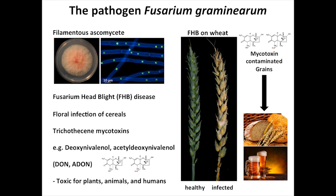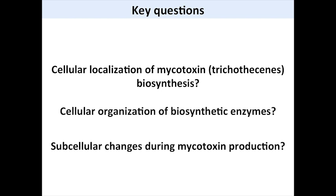Trichothecenes are also very important to study since they are known to be a virulence factor during wheat infection — trichothecenes enable the fungus to spread systemically through the rachis. That made the trichothecene metabolism very interesting to focus on. We were particularly interested in how toxin production takes place in Fusarium graminearum, where the toxin is localized in the cell, and how the biosynthetic enzymes are organized.